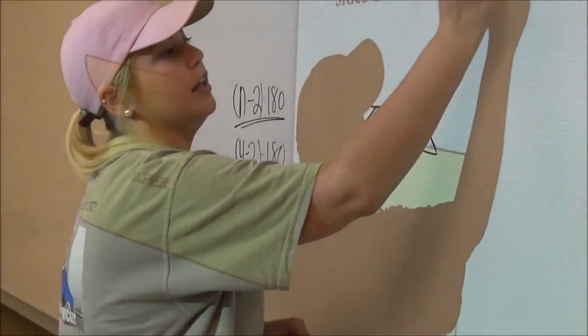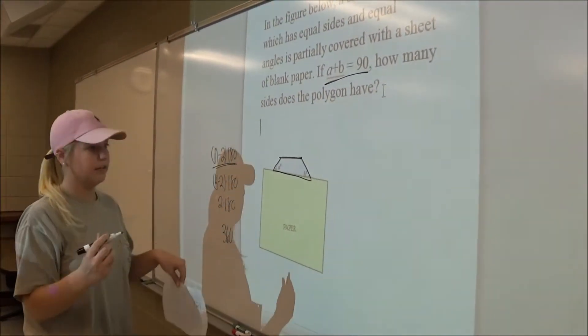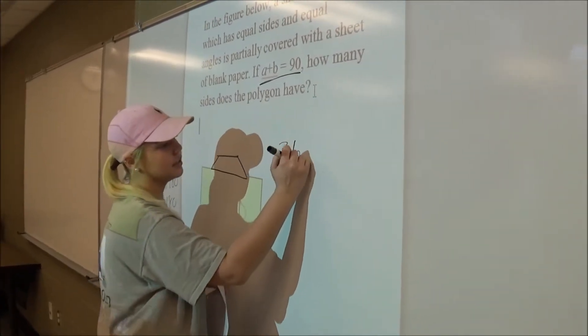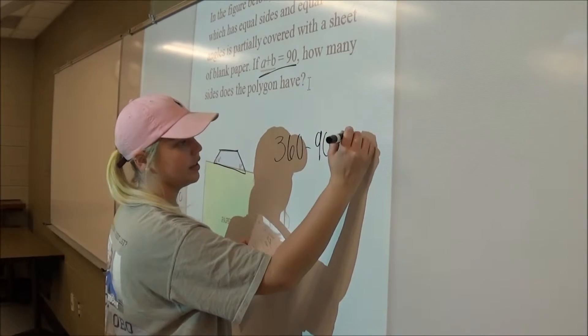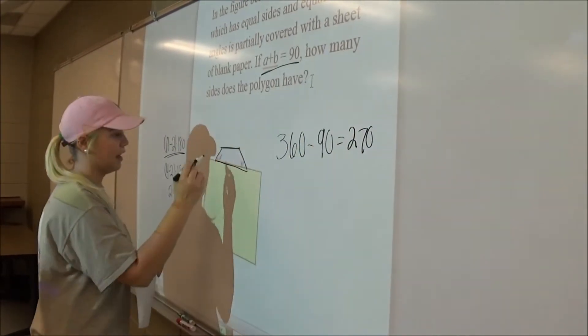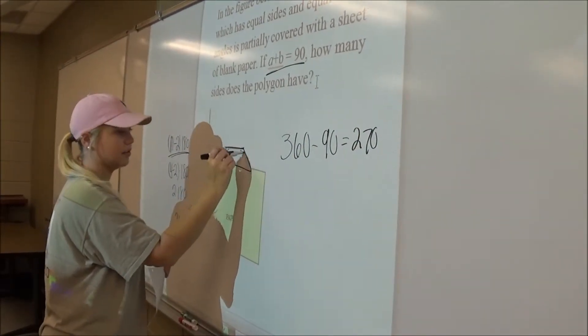So I took this and subtracted it from 360. 360 minus 90 equals 270, and that gave me these two angles.